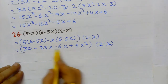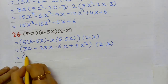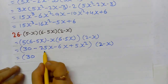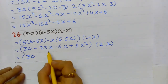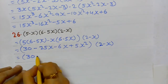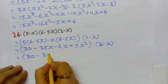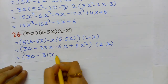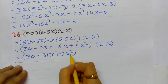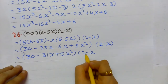Now combining like terms: -25x - 6x = -31x. So the result is (30 - 31x + 5x²), and the 2nd bracket (2 - x) remains.